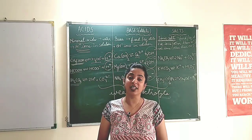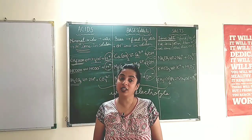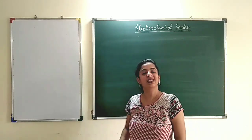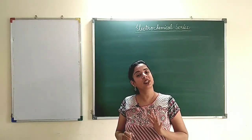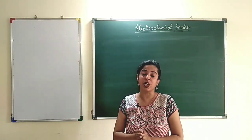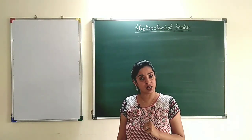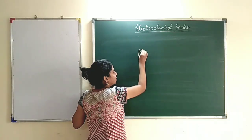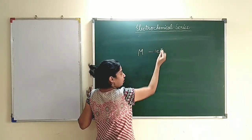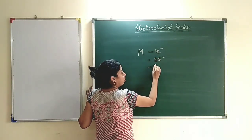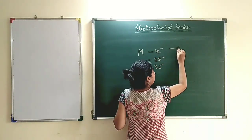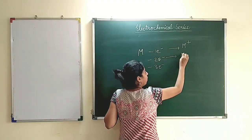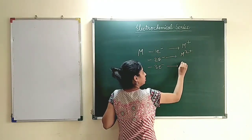Now we will talk about the electrochemical series and how it affects the selective discharge of ions on respective electrodes. In the electrochemical series we arrange metals in a particular series. A metal is an element which has 1, 2 or 3 electrons in the outermost shell, so it is very easy for the metal to lose electrons and form ions — losing 1 electron forms M+, losing 2 electrons forms M2+, and losing 3 electrons forms M3+.